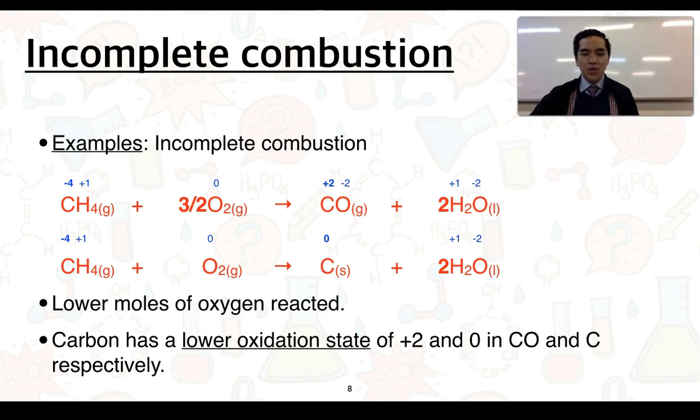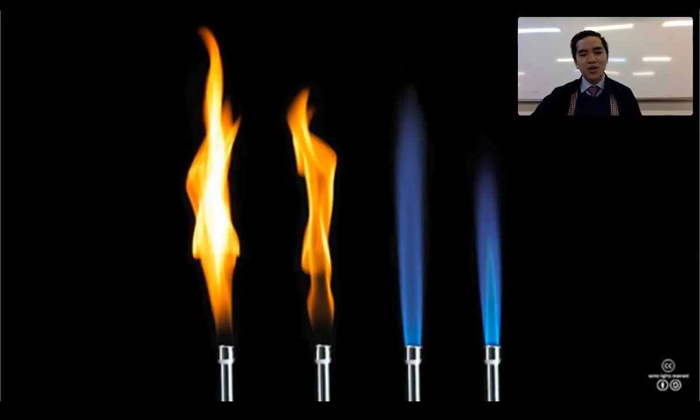One example you should all be quite familiar with for incomplete combustion is looking at a Bunsen burner flame. We know that with Bunsen burners if we close the air hole we end up producing a more yellowy sooty flame, and as we start to open up the air hole it converts that yellow sooty flame into a more blue flame which we know is the heating flame.